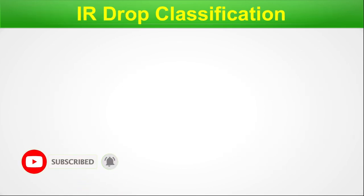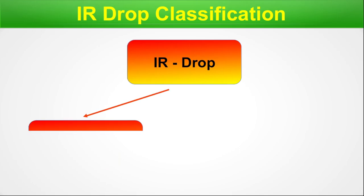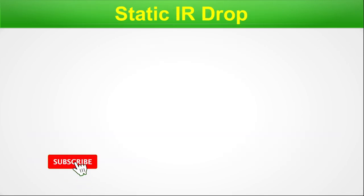IR drop classification: IR drop is broadly segregated into two parts — first, static IR drop, and second, dynamic IR drop. This is a simple classification, and in the upcoming slides we will touch on both static and dynamic IR drop analysis one by one.